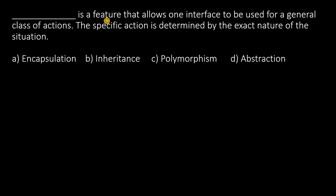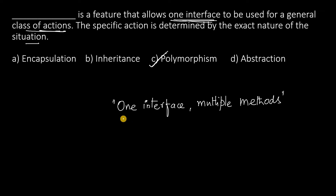See the next one: dash is a feature that allows one interface to be used for a general class of actions. The specific action is determined by the exact nature of the situation. Whenever you see the term 'one interface and multiple actions' or 'one interface multiple methods', the answer is always polymorphism.